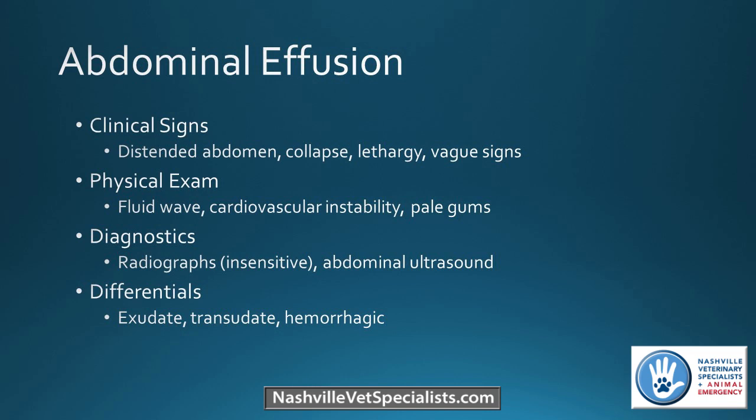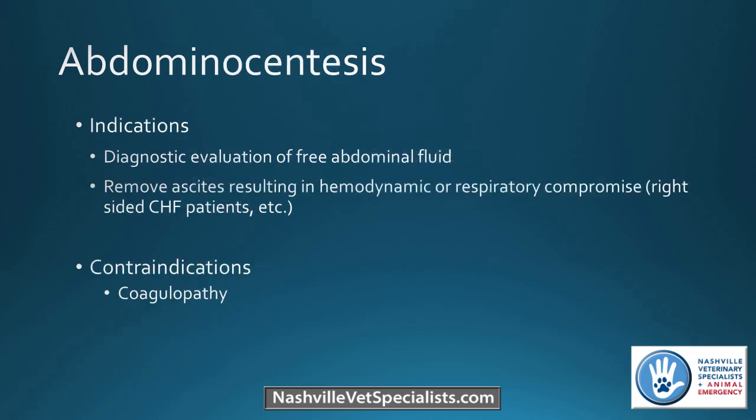X-rays are pretty insensitive for diagnosis; ultrasound is preferred. Just like pleural effusion, you can have exudates — a septic abdomen — or transudates from congestive heart failure, or hemorrhage from a ruptured splenic mass, which is probably our most common reason for abdominal effusion. Diagnostic evaluation is the most common reason to sample. In cases of chronic ascites, we'll sometimes remove larger quantities if it's causing hemodynamic or respiratory compromise — usually right-sided heart failure or chronic liver failure patients.